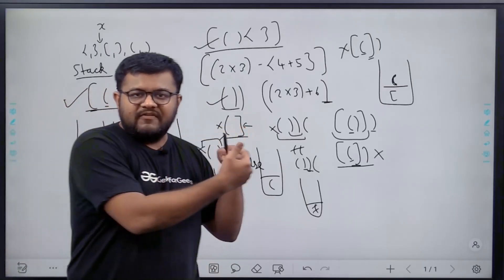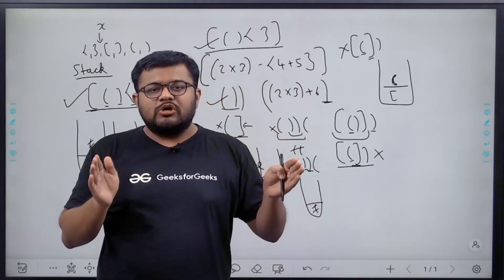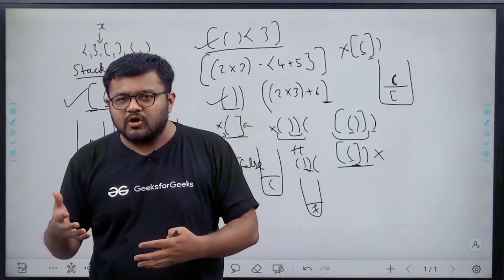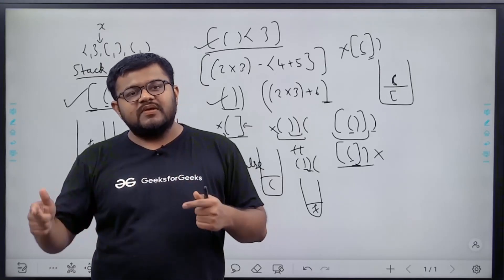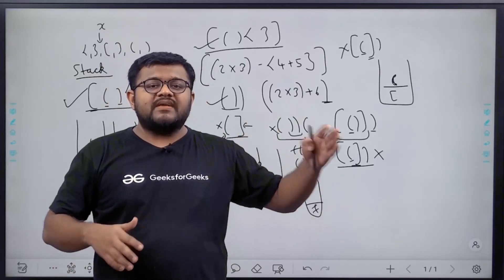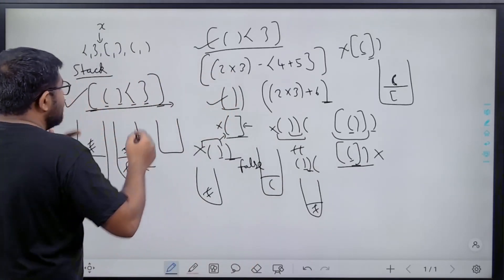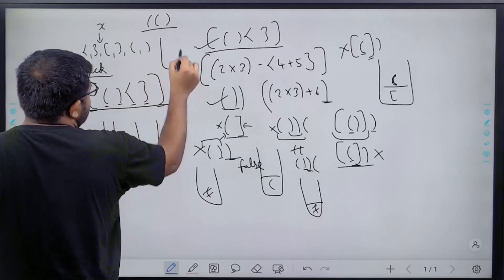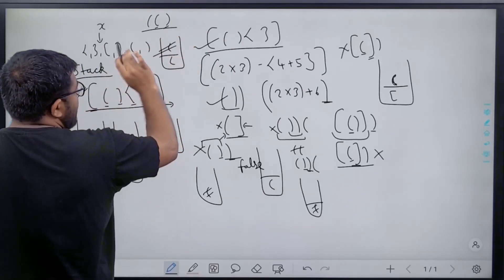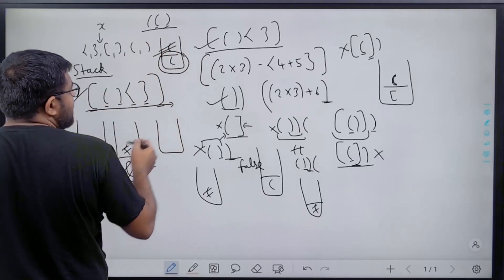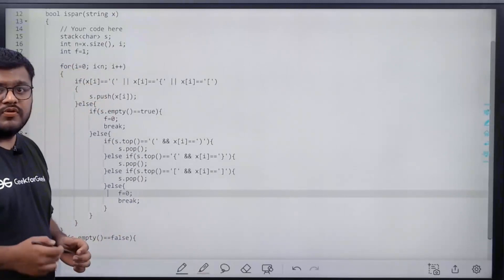To summarize the algorithm: traverse left to right; push opening brackets onto the stack; for closing brackets, match with the top of the stack — if same kind, pop and form a pair; if not same kind or stack is empty, mark as not balanced and break. After the loop, if the stack is not empty, there are more opening than closing brackets — also return false.